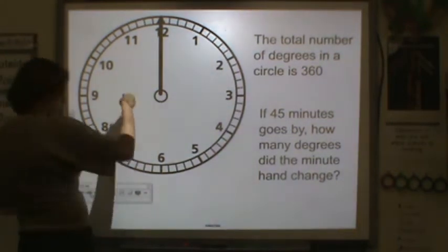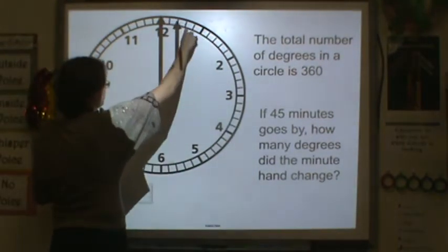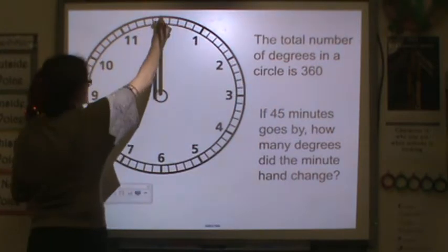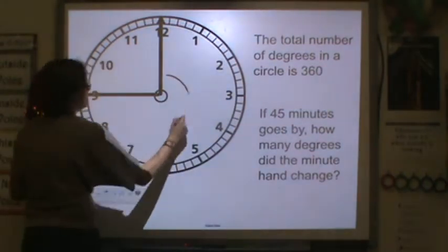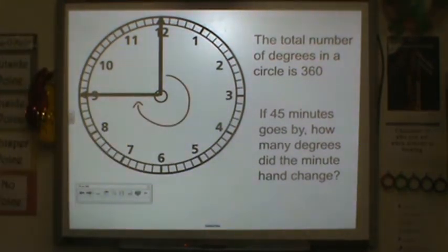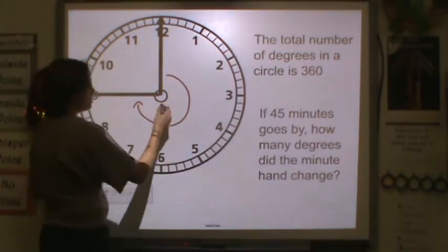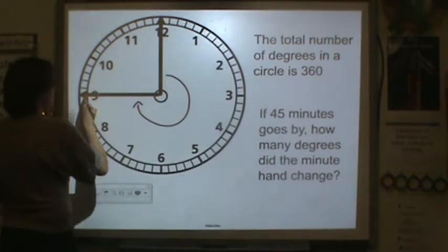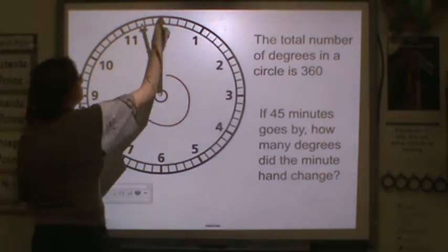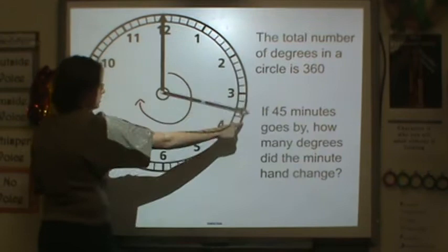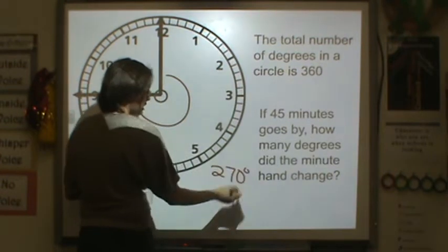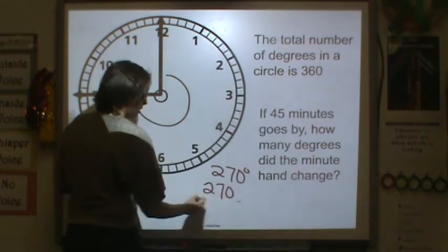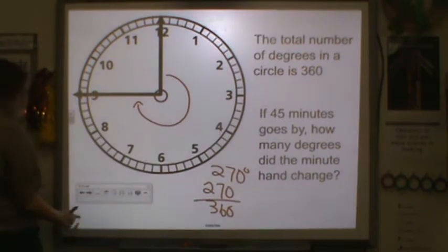If 45 minutes goes by, so if we start here and we do 45 minutes, 45 minutes would be my clock goes like this. If 45 minutes goes by, how many degrees did my minute hand change? Well, this is a three-quarter turn. It started here. We did a one, two, three-quarter turn. We know a three-quarter turn is 270 degrees. As a fraction, that's 270 out of 360 degrees.